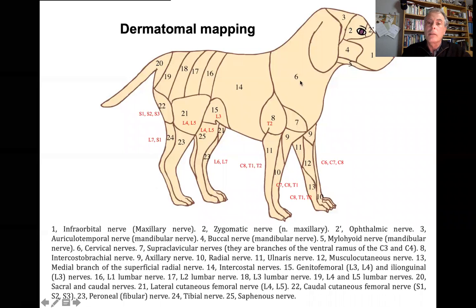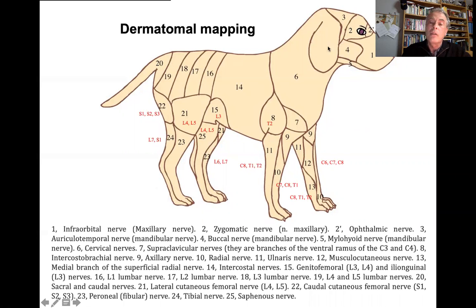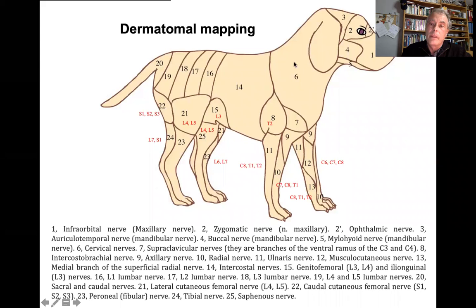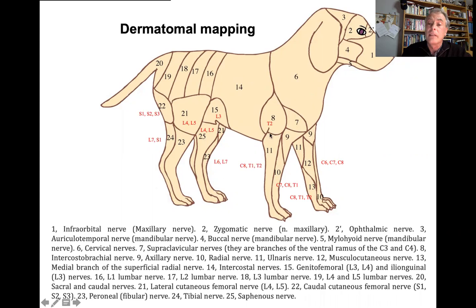We come now to dermatomal mapping — we can map areas on the skin of the animal that are innervated by particular sensory nerves. You have that in the text and in the PDFs, so you can go and check for the different areas.